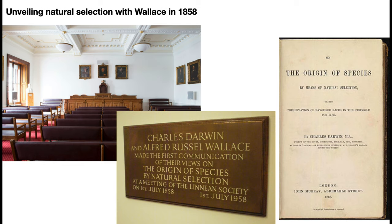Wallace wasn't as careful a worker as Darwin — he hadn't really rounded the bases the same way. So both got the opportunity to present at the same time at the Linnaean Society. After that, Darwin was sent home and basically told to publish his book as quickly as he could. Finally, the Origin came out in 1859 — certainly a success scientifically but also a publication success, sold in railway stations, widely read, and meant to be understandable by lay people.